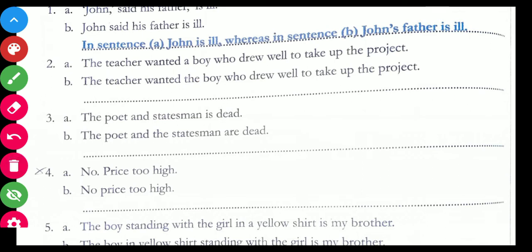When you will be writing the answer, you have to write in the same way as given in the example. In sentence A, write: 'the teacher wants any boy who is good in drawing' — in this way you have to write the sentence. Make the spaces accordingly. Take the third one.